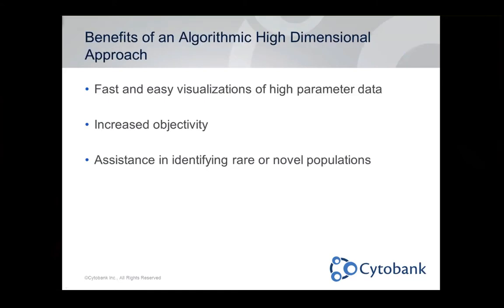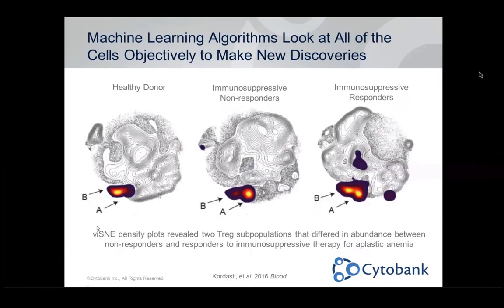The approach we're talking about today with Visne specifically is that algorithms help you by giving you fast and easy visualizations of high parameter data. It's a step towards objectivity — you as the user are still choosing what to put into the algorithm, so it's not completely objective, but it's a great move in that direction. Lastly, they give you assistance in identifying rare and novel populations that might look very similar when looking at two parameters at a time.